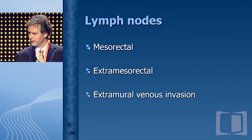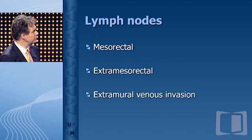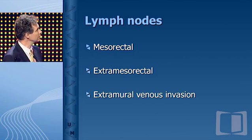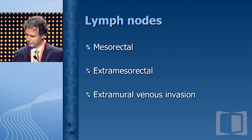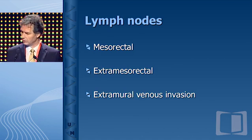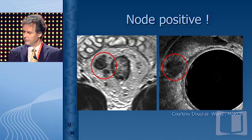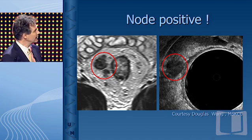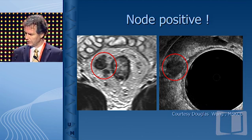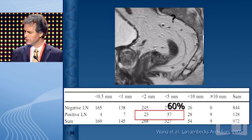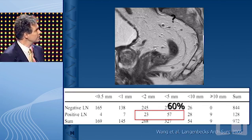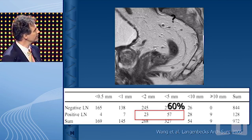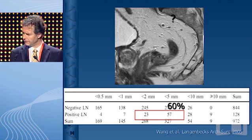Now, lymph nodes. It's not just mesorectal lymph nodes — we've come to realize we should also look outside of the mesorectum, and there is extramural venous invasion to consider as well. If you have a big lymph node, you can see that easily with EUS, MRI, and probably even CT. The problem in rectal cancer is that you often see little nodes of 5 mm, and we know that a lot of involved lymph nodes are smaller than 5 mm, which makes staging difficult.